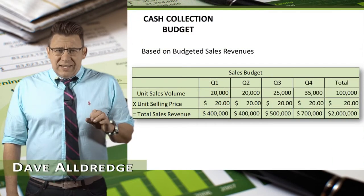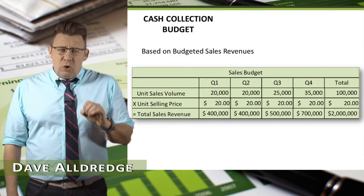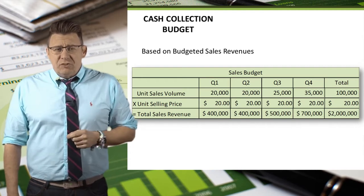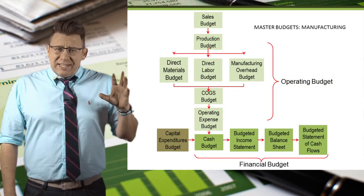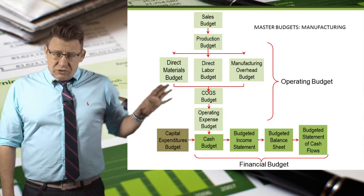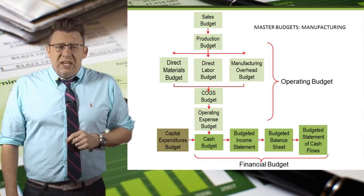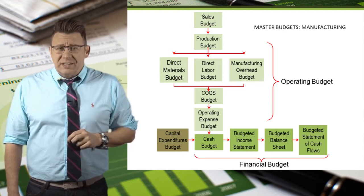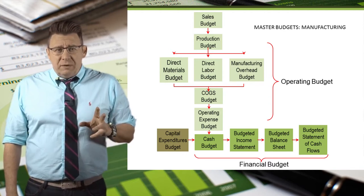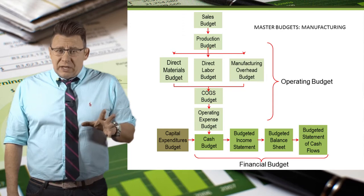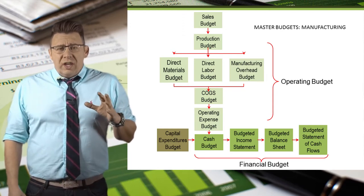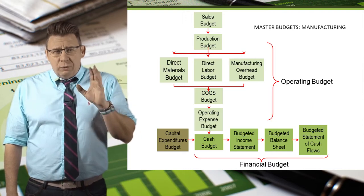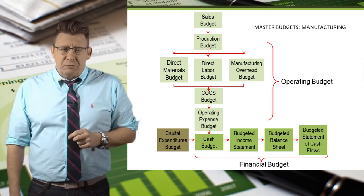The cash collections budget is a component of the cash budget, and it is based on data from the sales budget. The cash collections budget, which is again part of the cash budget, is the ninth budget completed in the master budget process. This budget can be either done separately or as part of the larger cash budget. Either way, we will use these results in the cash budget.